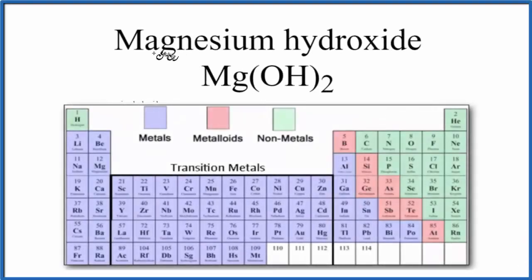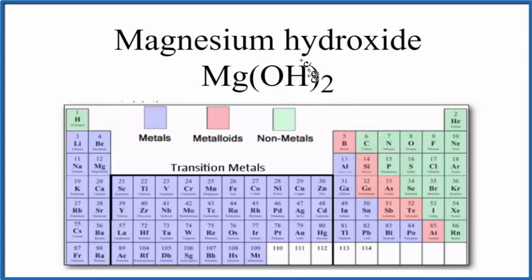In this video, we'll look at whether magnesium hydroxide, that's Mg(OH)₂, is ionic or covalent. The short answer is that the compound overall is ionic. But when we look at the bond between the O and the H in the hydroxide ion, these bonds are covalent.